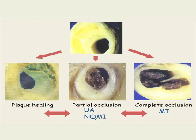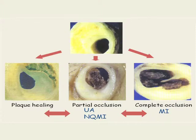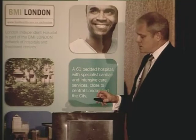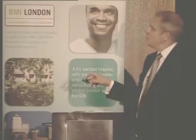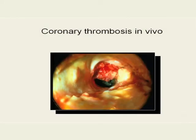This will be unstable angina; this is ST segment elevation. And just in vivo, if you put down an angioscope, you can actually look and see — in life — a clot hanging out into the lumen of the coronary artery. This is a patient with unstable angina.